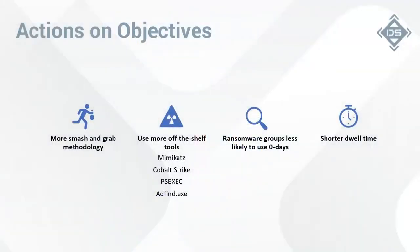Another big thing: ransomware groups are not really going to use zero days. Unless you're a huge high-value target and they're a really sophisticated group, they're not going to waste zero days just to drop ransomware on your network. You're more likely to see really common CVEs being exploited — the RCE thing with VPNs, brute forcing RDP systems, ProxyShell being dropped on Exchange servers. You're not going to see really stealthy zero-day methods of exploitation. A lot of this is because they're going for low-hanging fruit — there are so many vulnerable targets that they don't even need to go after the larger ones.